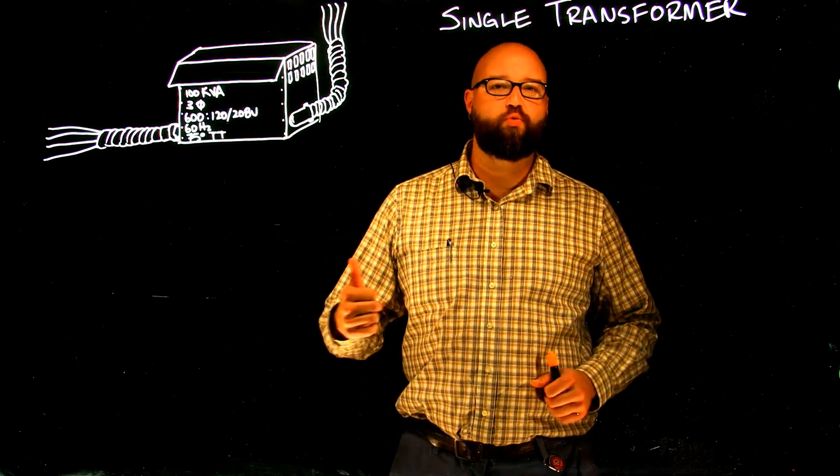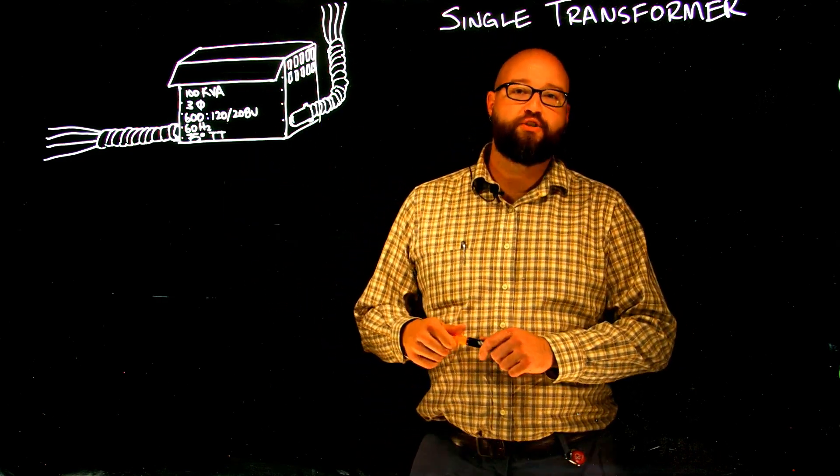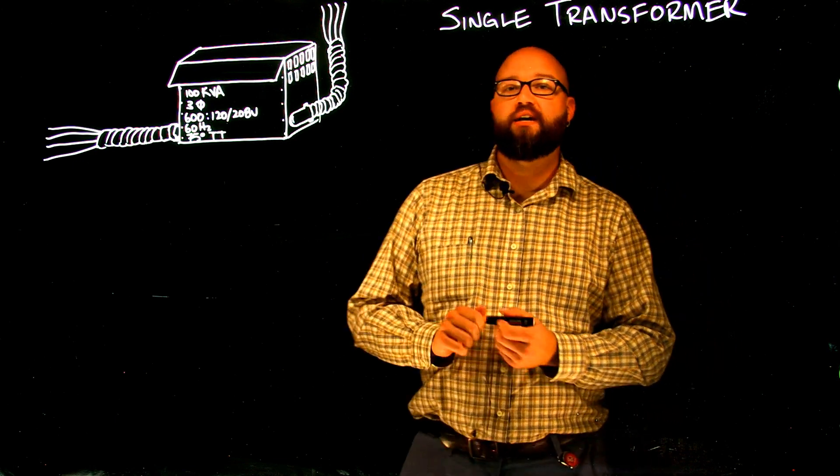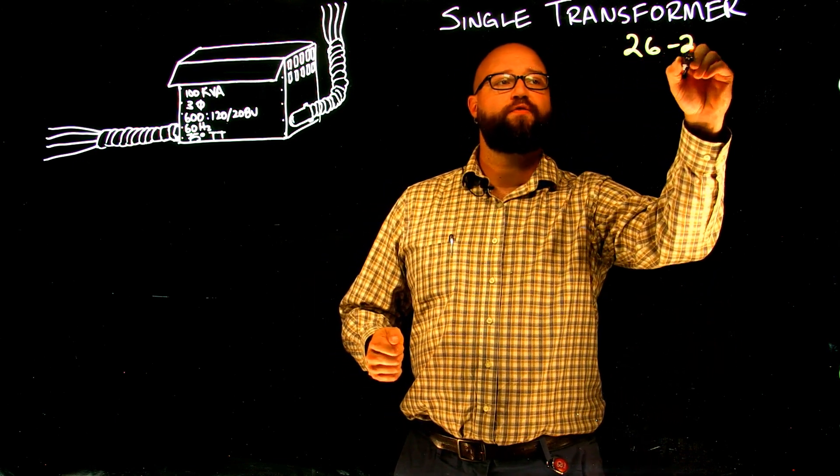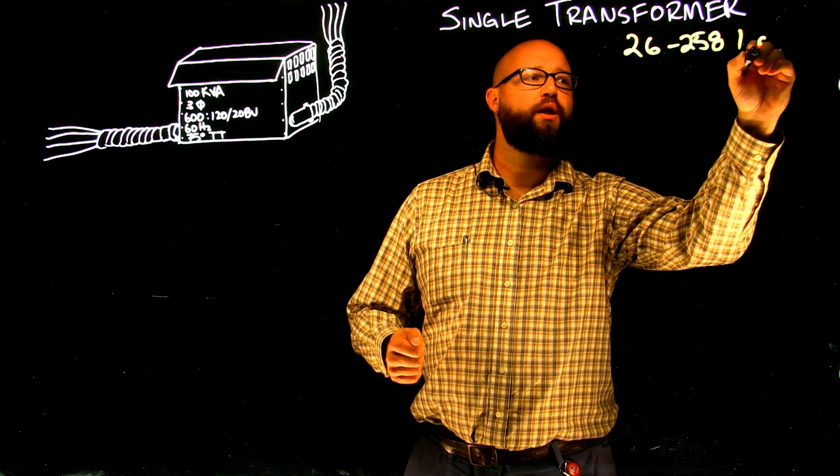So when we're calculating conductor sizes for transformers, we need to keep in mind rule 26-258, subrule 1, item A, for single transformer primary side calculations,